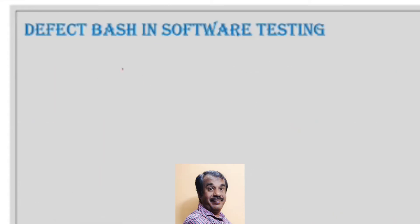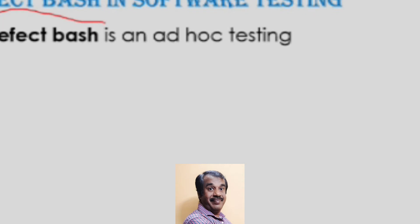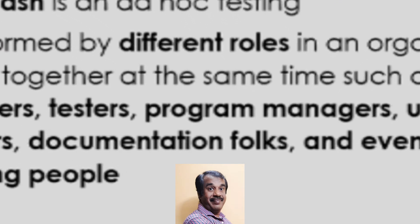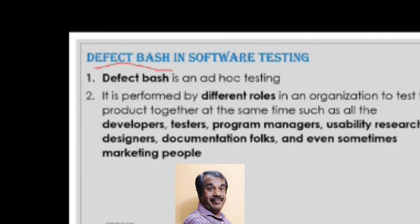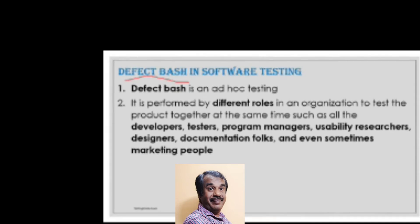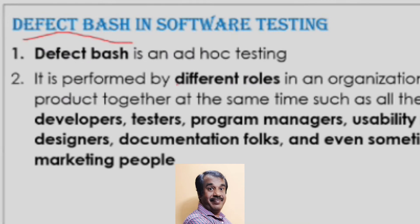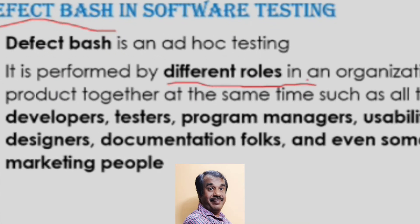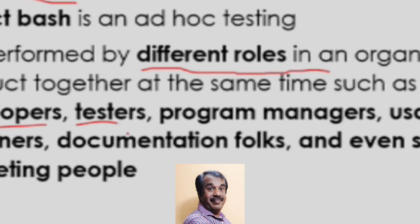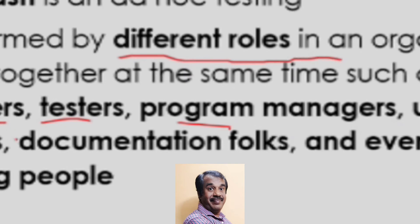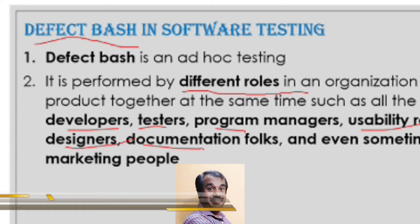Defect bash is a form of ad hoc testing performed by different people in an organization — it could be testers, developers, program managers, usability researchers, designers, or documentation folks — a mix of everyone available.